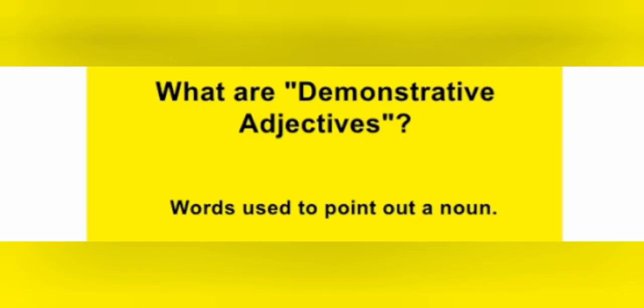The next one is demonstrative adjective. Demonstrative adjectives tell us which thing or person is being talked about — kis cheez ke baare mein ya kis insaan ke baare mein baat ki ja rahi hai. They are called demonstrative adjectives.